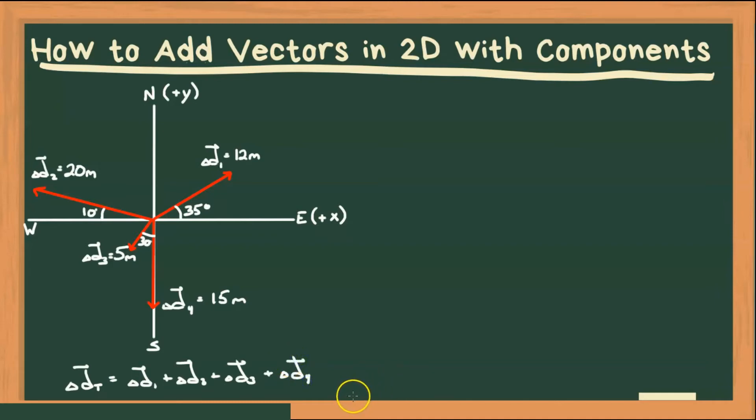So the first step, then, is to figure out all of our components. So I want to break delta D1, 2, and 3, and 4 into their parts, their X and Y, or horizontal and vertical components. So let's start with delta D1. Here would be our horizontal component, and here's our vertical component. Let's call this delta D1X and delta D1Y. And I'm going to create a little chart here, where I'm going to solve for the X and Y components of each vector.